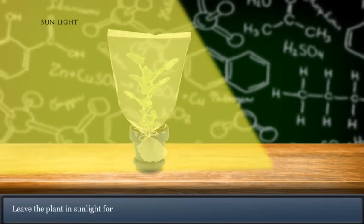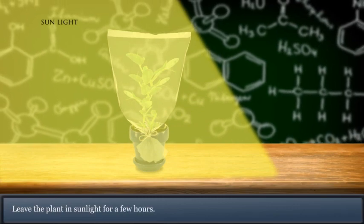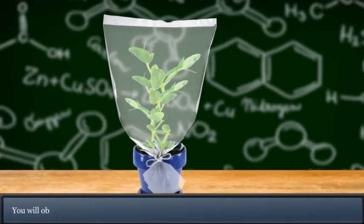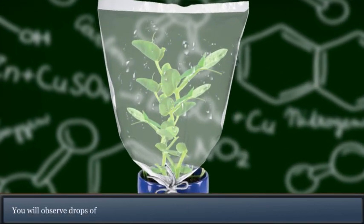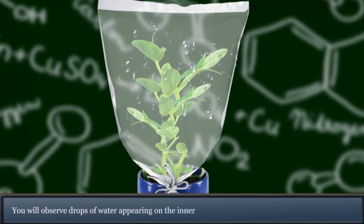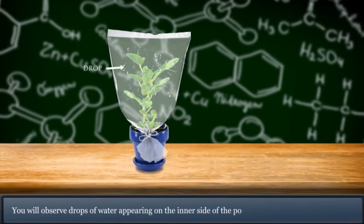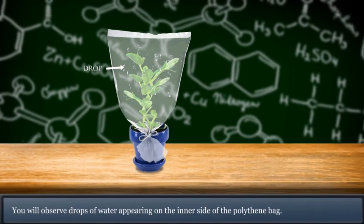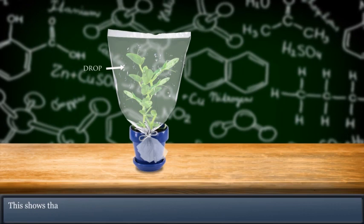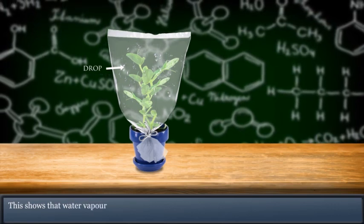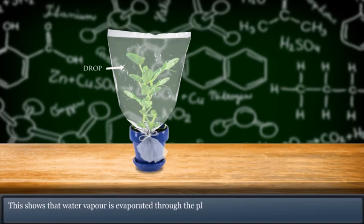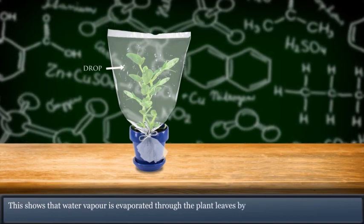Leave the plant in sunlight for a few hours. You will observe drops of water appearing on the inner side of the polythene bag. This shows that water vapor is evaporated through the plant leaves by the process known as transpiration.